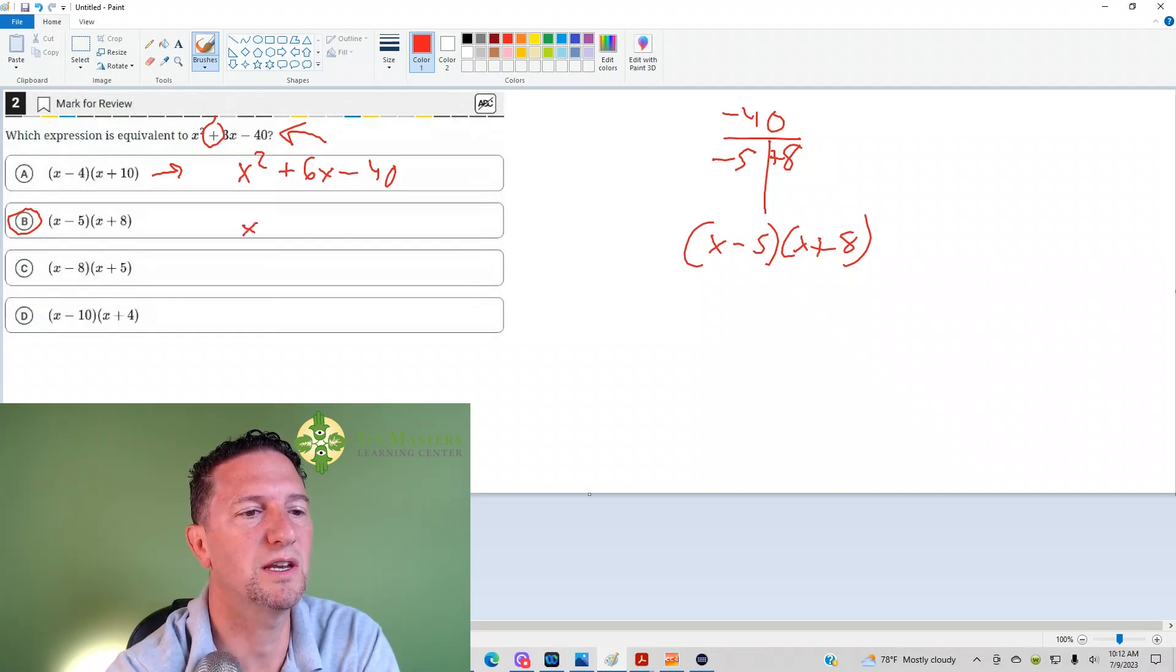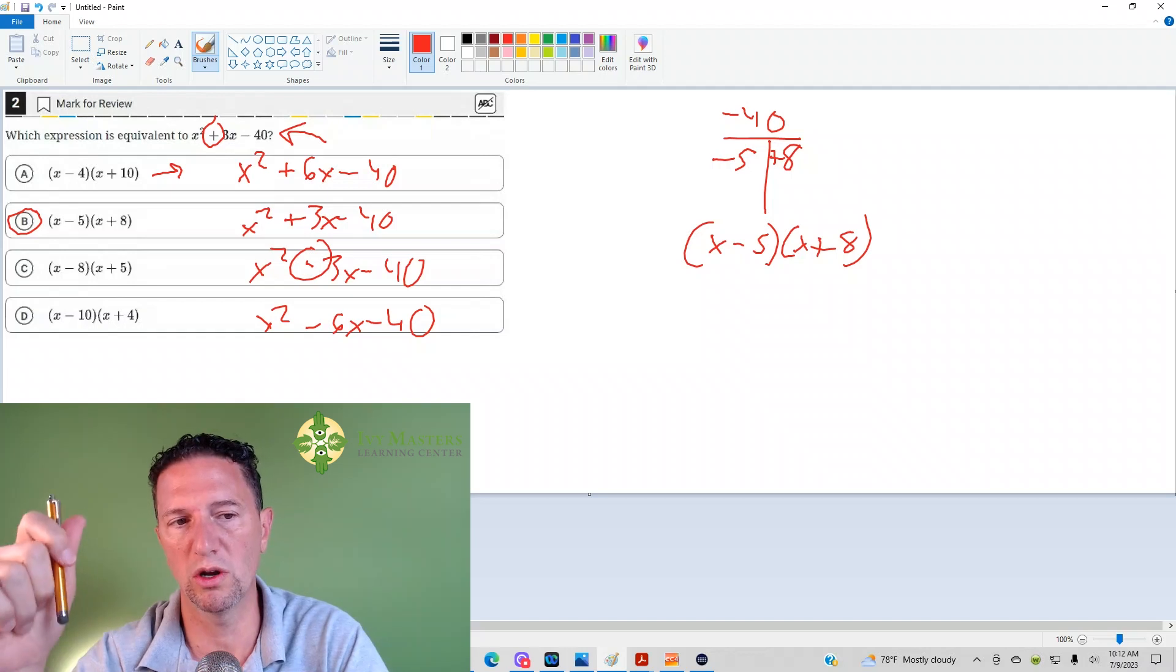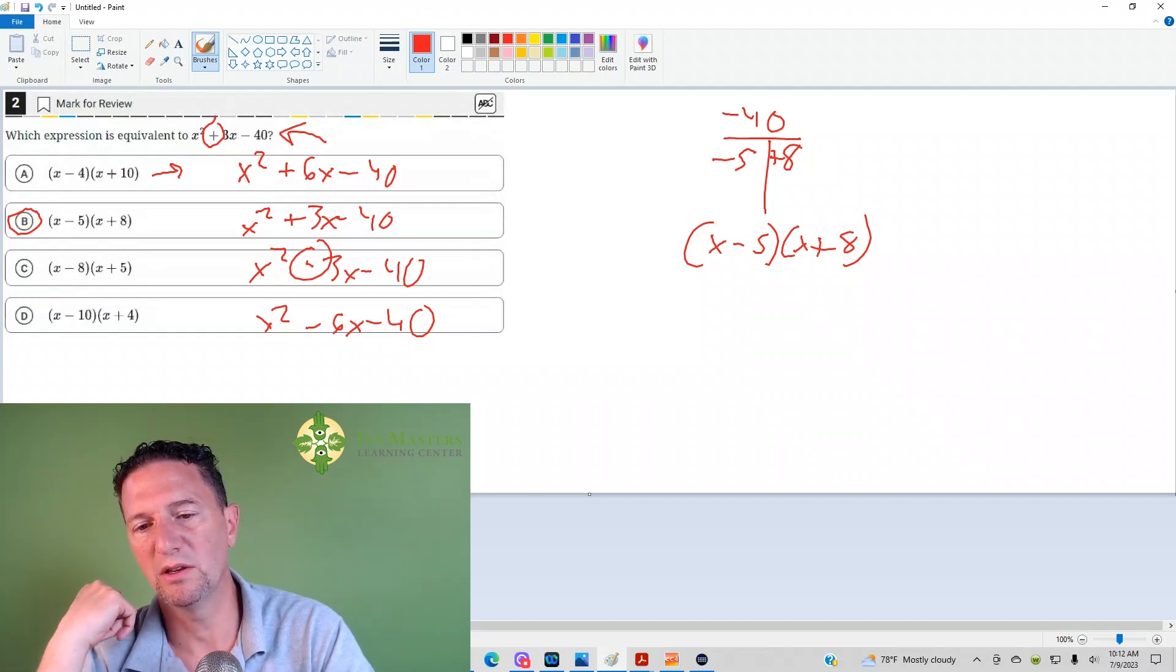Here, of course, I'd get x squared plus 3x minus 40, which works. Here, I'd wind up with x squared minus 3x minus 40, which doesn't work because we've got the negative 3 in the middle. And here, I'd wind up with x squared minus 6x minus 40. And again, the middle term is wrong. That's the second way you could do it.